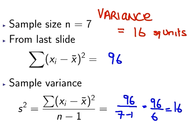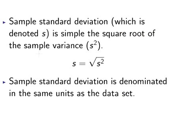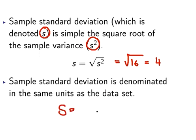Now we'll compute the sample standard deviation. That is denoted s, which is the square root of the sample variance s squared. We simply find the square root of 16, which equals 4. Importantly, the sample standard deviation is denominated in the same units as the data set. So s is simply 4 units.